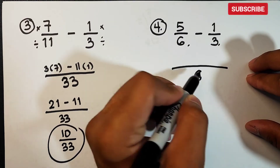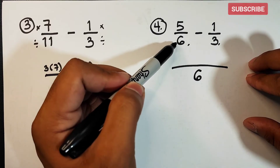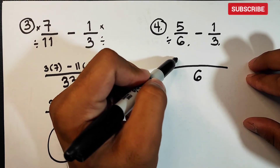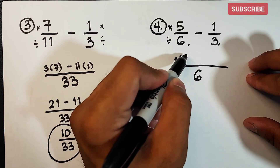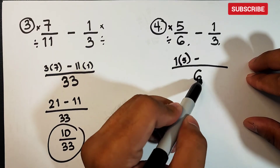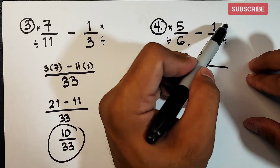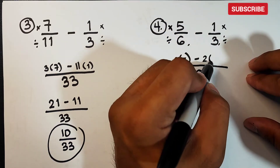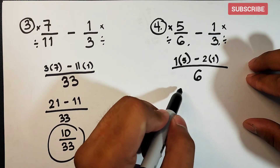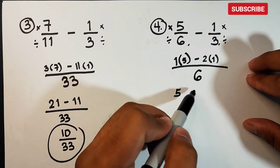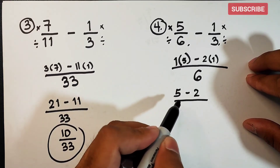The LCD is 6. So divide: 6 divided by 6 is 1, times 5; minus 6 divided by 3, which is 2, times 1. Simplifying the numerator: 1 times 5 is 5, minus 2 times 1 equals 2, over 6.